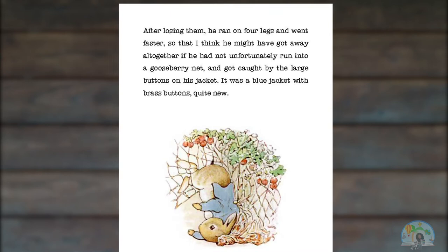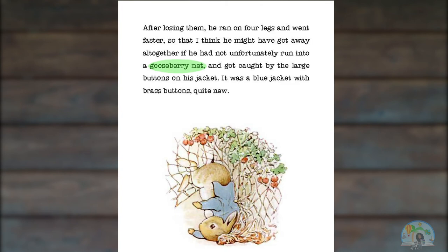I've never heard of a gooseberry net. But I can look at the picture here to maybe give me some clues. So I'm thinking a gooseberry is a type of berry — I see the word berry in it. And I can also see it looks like some berries in the picture. So maybe this gooseberry net is a net that you put over these berries to maybe help protect them, because I know that in gardens, sometimes you put things over the plants to protect them.